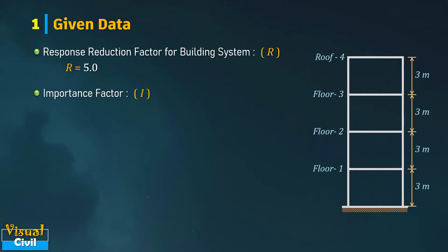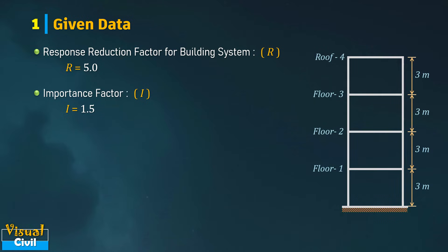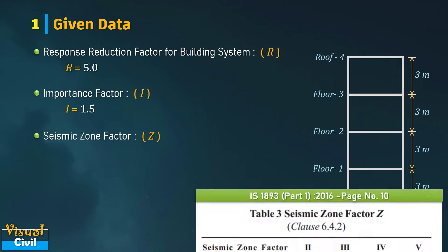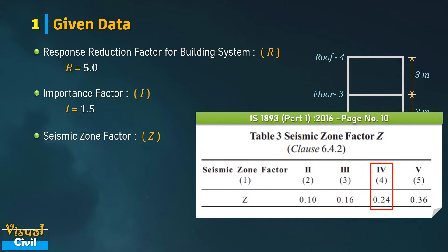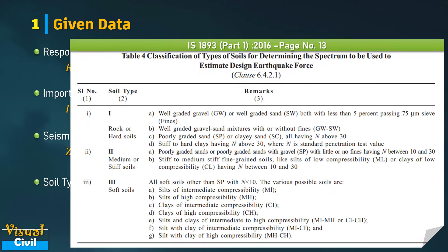Next, get the value of importance factor I. From Table 8 of the IS code, as the building is used as a hospital, the importance factor is 1.5. Table 3 of IS 1893 gives the values of seismic zone factor Z as per the seismic zone. Here, the building is located in seismic zone 4, hence the value of Z is 0.24. As per Table 4, the foundation soil type is classified as Type 1 for hard rock.